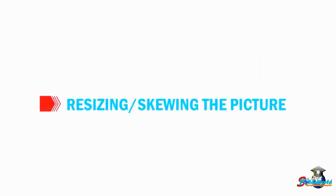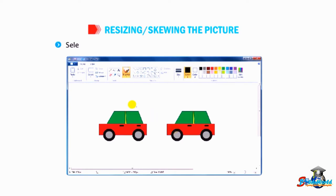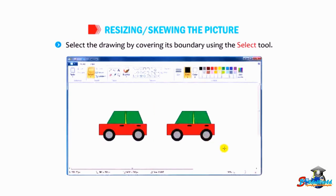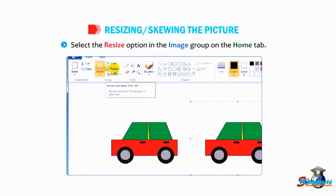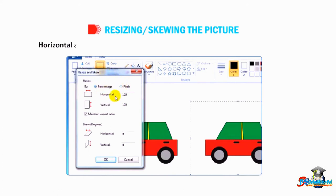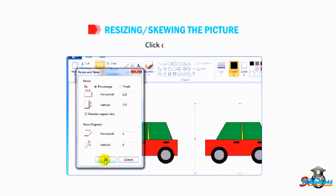Let us find out how to resize the picture. The size of the picture can be increased or decreased vertically or horizontally. Select the drawing by covering its boundary using the select tool. Select the resize option in the image group on the home tab. Specify the resize in percentage or pixels and skew in degree for both horizontal and vertical in the respective boxes according to your requirement. Click on OK.